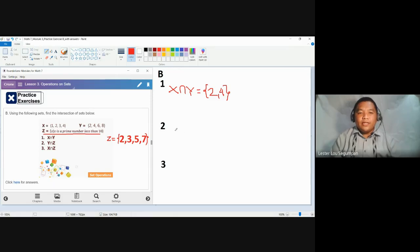For number 2, the intersection of Y and Z, simply look for the common elements in both sets. Set Y contains 2, 4, 6, and 8. Set Z contains 2, 3, 5, and 7. The only element found in both sets is 2.